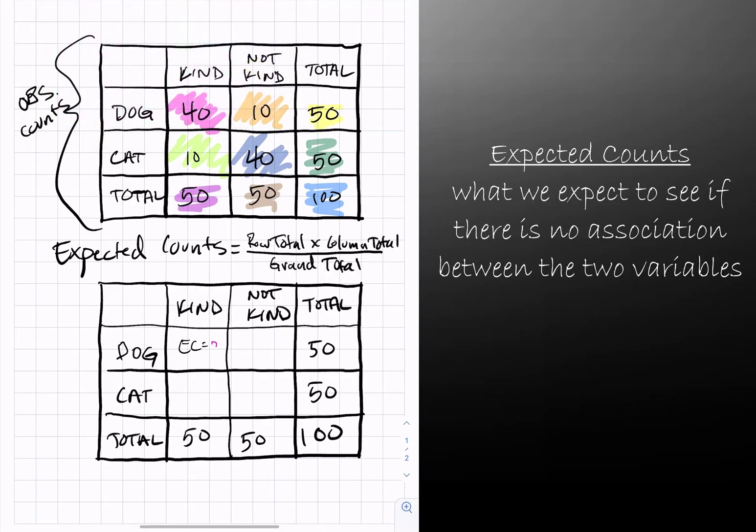For each of these cells, we had 25 as our expected count. That's not always the case, but it's the case here because they all have the same row and column total.